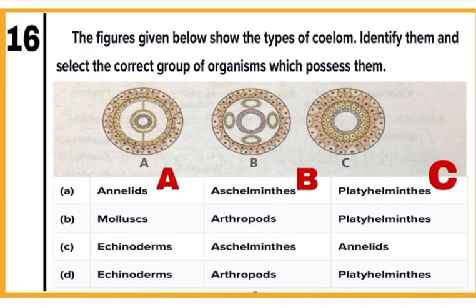Question 16: The figures show types of coelom. Identify them and select the group of organisms which possess them. Figure A is of coelomates having a true coelom, B is of pseudocoelomates having a false coelom, and C is of acoelomates having no coelom. Out of the four given options, option A matches — annelids are coelomates. Mark A as the correct answer.